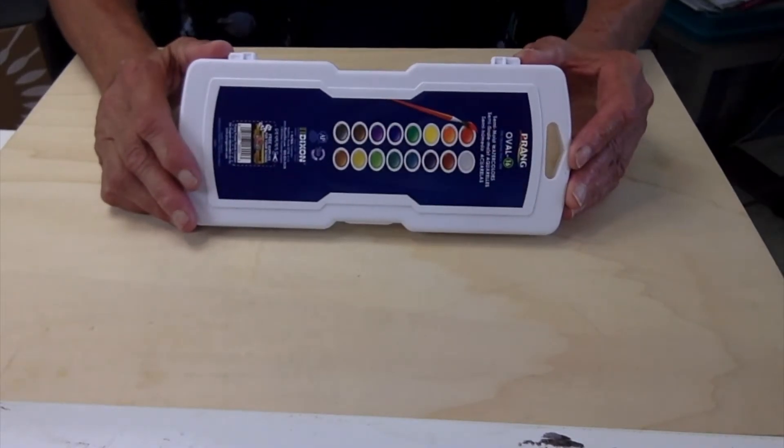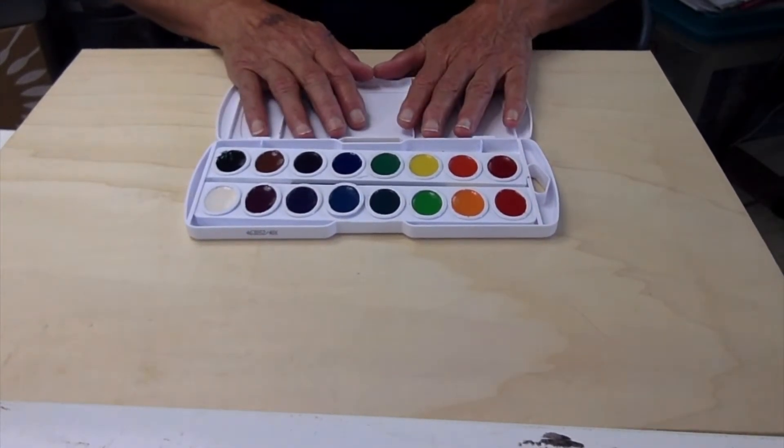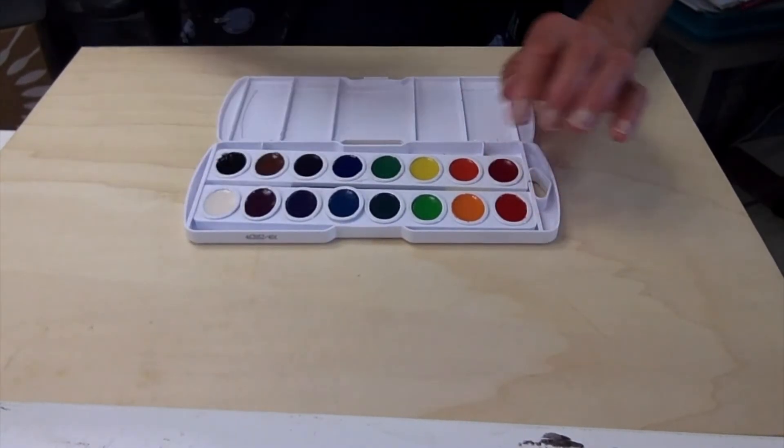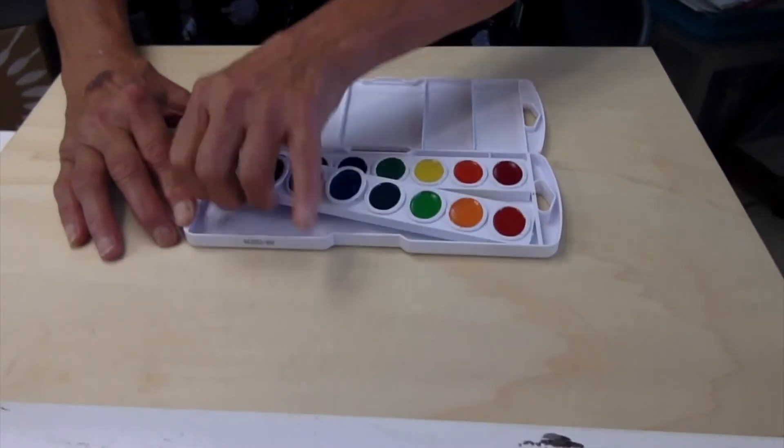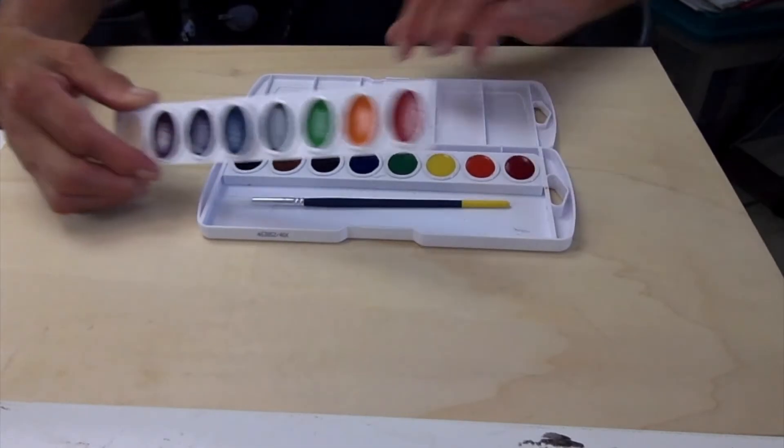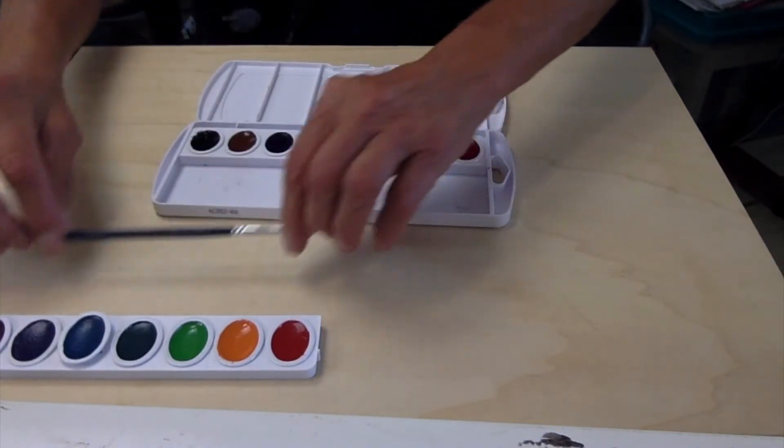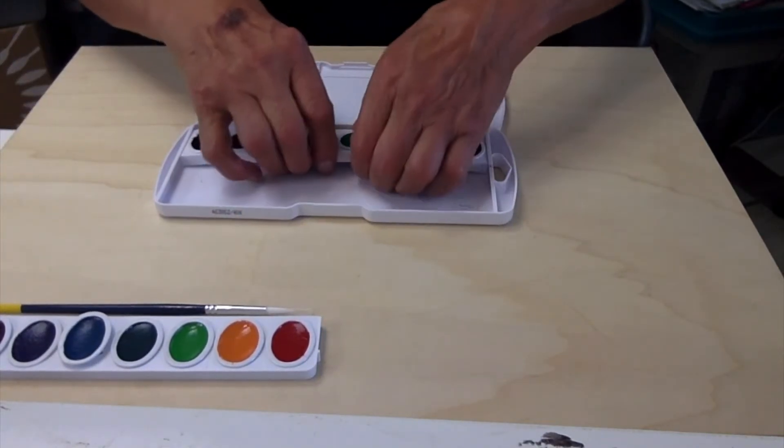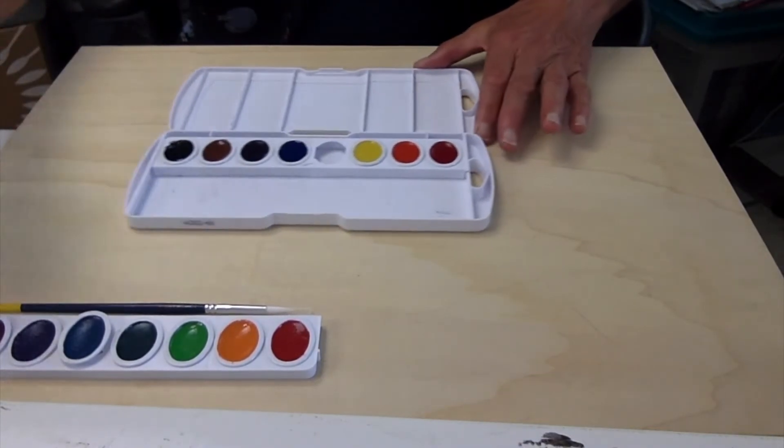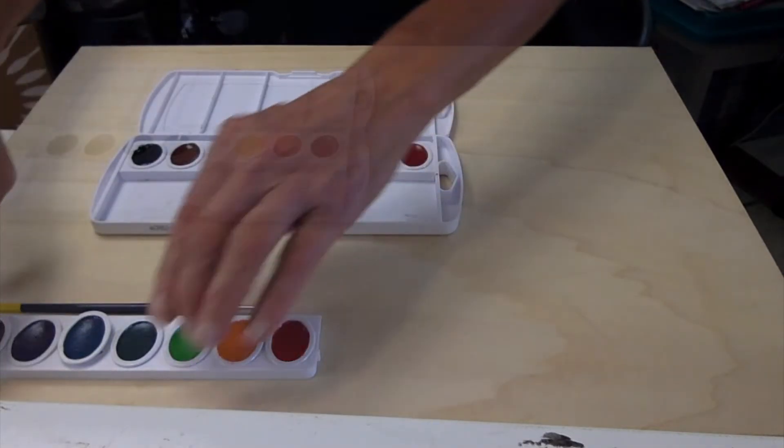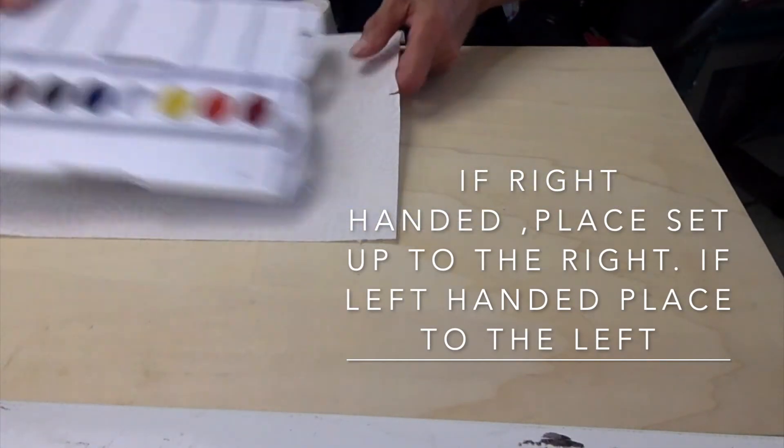This is a Prang watercolor set and when you open it up, it has a little palette and it has the wells where the paints are. These are cake paints so they're semi-moist. But for our lessons, I'm going to have you pop out that second tray and set it aside. This brush is not a very good brush so we're not going to bother with that. Then we're going to pop out this green because I don't really like this green. We can always make our green. I like to put paper towel under the bottom of my palette.